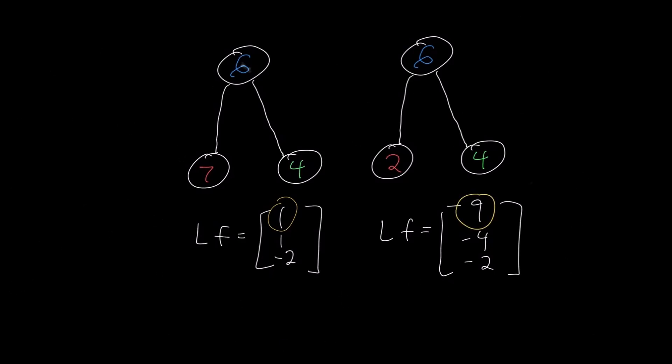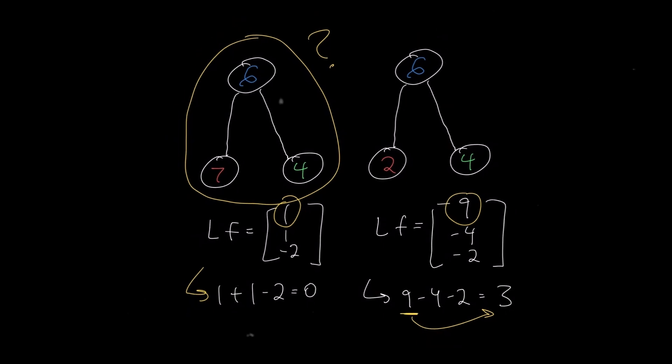That's how we describe the similarity for a single node. What about summarizing how similar a graph's nodes are to each other overall? We can add up the differences for every component in LF, weighing each component's difference by its assigned value in F, which means nodes with larger values more strongly influence this summarized value.